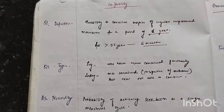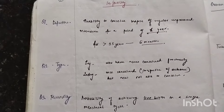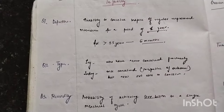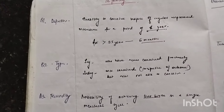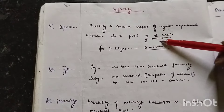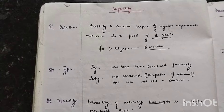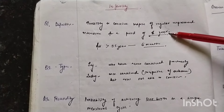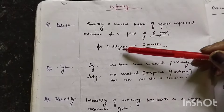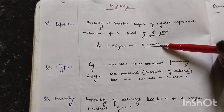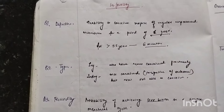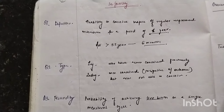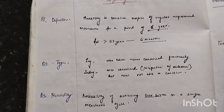So what does infertility mean? It means there is inability to conceive in spite of regular unprotected sexual intercourse for a period of one year. This one year is taken in case of women less than 35 years of reproductive age group. And if the woman is more than 35 years, we take six months.